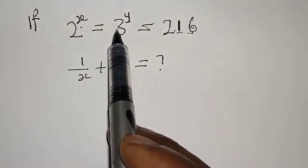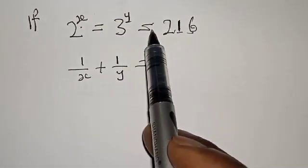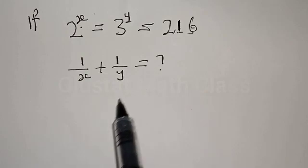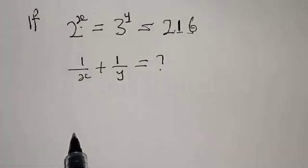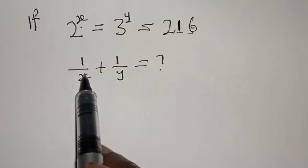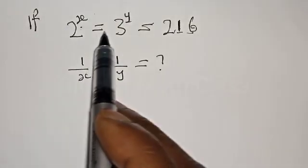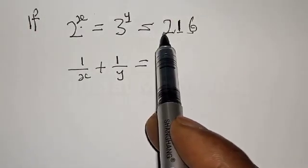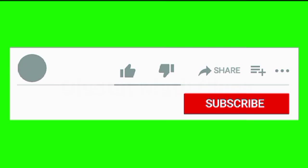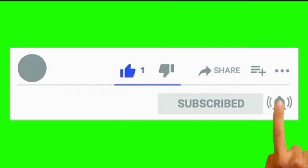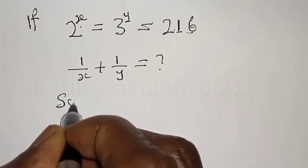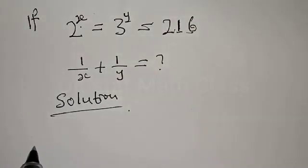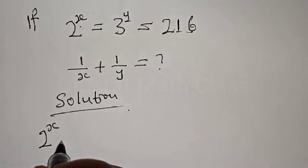If 2 raised to power s is equal to 3 raised to power y is equal to 216, find 1 over s plus 1 over y. Hi everyone, welcome to my class. In this class we want to find the value of 1 over s plus 1 over y from the given equation 2 raised to power s equal to 3 raised to power y equal to 216. Please don't forget to like, share, comment and subscribe.